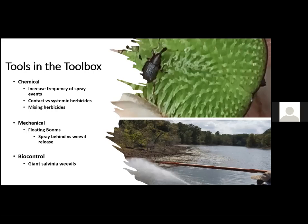That took us back to basics — let's look at an integrated pest management plan. We opened the toolbox and started looking at all the different tools we had. Obviously the first one that comes to mind is herbicides. We started looking at maybe rather than doing one or two treatments a year, what if we increased frequency — treating every other month? Could we actually decrease the amount of salvinia growing at one time so we weren't having to treat 40 acres in a day? We also wanted to look at contact versus systemic herbicides — what would be best — and whether we could mix them based on the label.